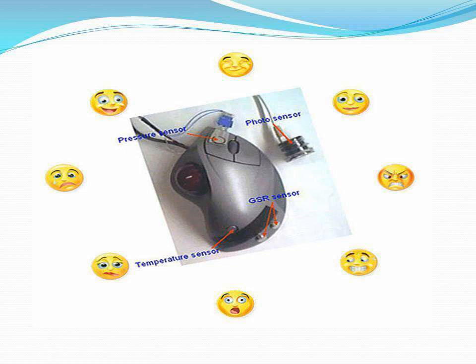In this picture you can see a mouse with emojis. Emojis are used to represent basic emotions. You can see a pressure sensor, temperature sensor, photosensor, and GSR sensor. GSR is galvanic skin response — it is used to measure electric conductance of the skin.